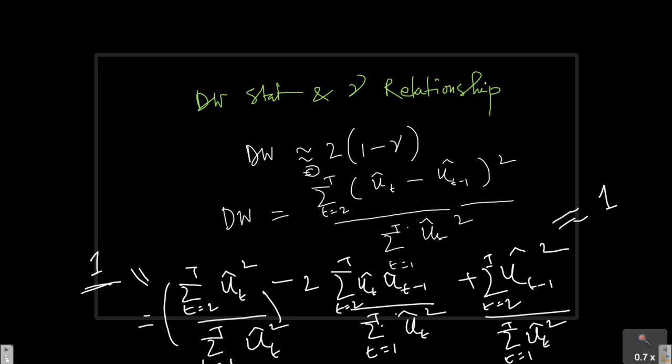Similarly for this one also, ut minus 1 and ut, if I take the same logic here I can approximate it to 1. Whereas for the term in the middle I will have this ut and ut minus 1, and in the denominator I have the variance of ut. Now it actually will convert into covariance. The numerator will convert into covariance and the whole term will look like the correlation coefficient which is essentially the gamma here.